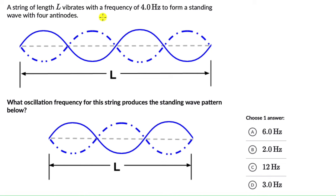A string of length L vibrates with a frequency of 4 Hz to form a standing wave with 4 antinodes. We can see the standing wave here. What oscillation frequency for this string produces a standing wave pattern below?